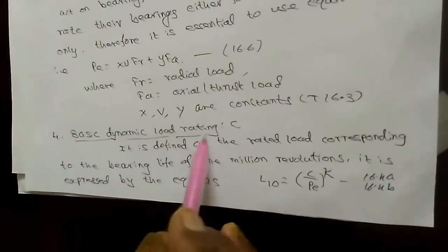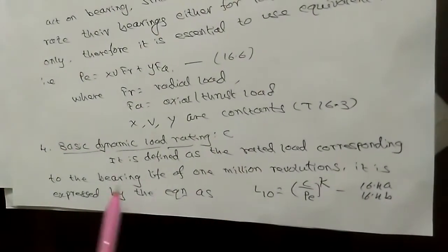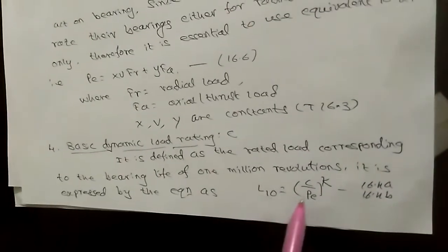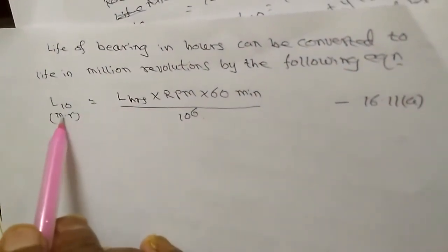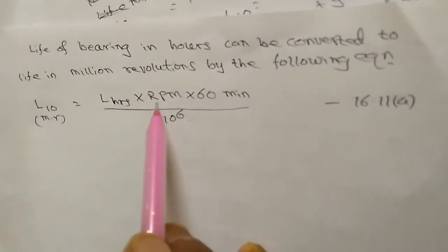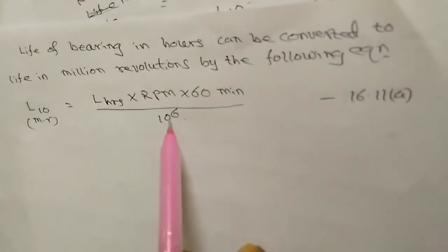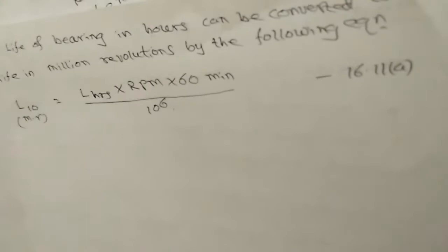The last definition is the basic dynamic load rating C, which is the load carried by the bearing corresponding to 1 million revolutions. The equation is L10 = (C/PE)^K. From the design data handbook: L10 = (C/PE)^3 for ball bearings, and L10 = (C/PE)^(10/3) for roller bearings. To convert bearing life from hours to million revolutions, use: L = LH × RPM × 60 / 10^6. These are the three key equations used in bearing design.